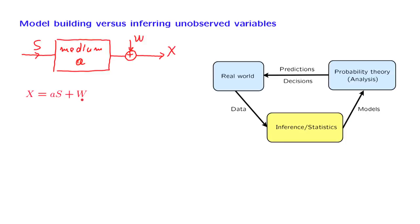This situation often brings up the following inference problem. We want to find out what the medium is. How do we do this? We send a pilot signal S, that is, a signal that we know.